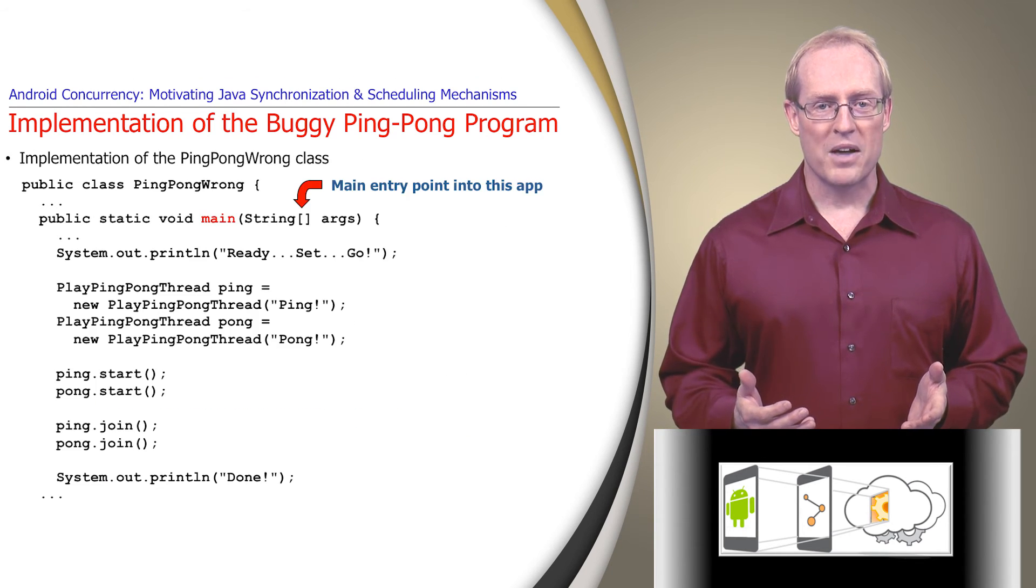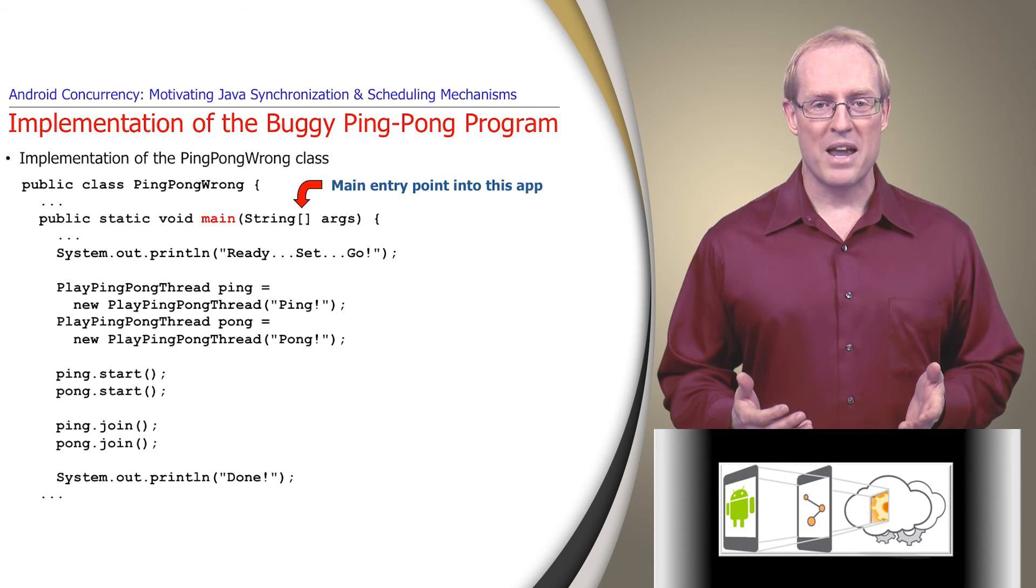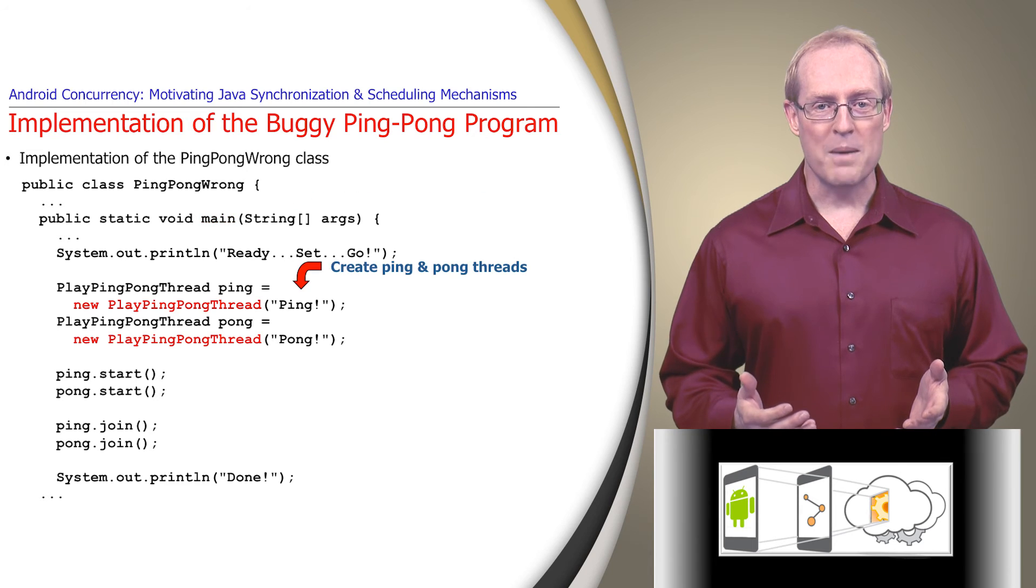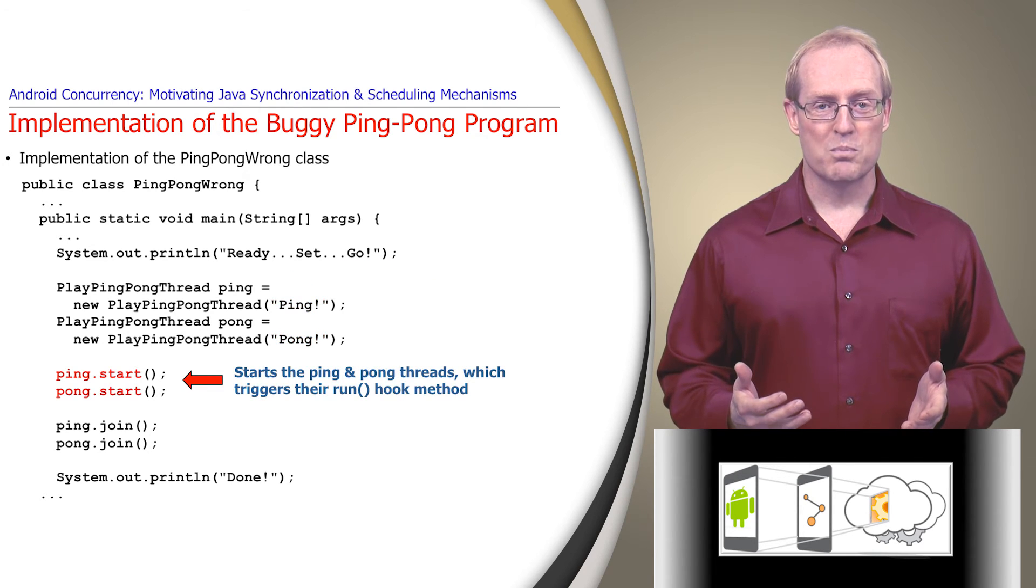Here's the main entry point method of the ping-pong-wrong class. This method executes in the main thread and creates two play ping-pong thread objects, passing in parameters that indicate whether to print a ping or a pong string. It then starts both threads, which triggers the Java Virtual Machine to invoke their run hook methods to execute the ping-pong algorithm concurrently.